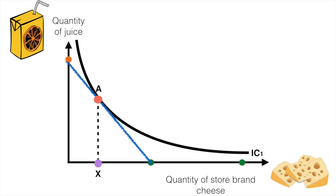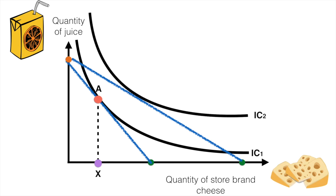Suppose the price of store brand cheese drops causing the budget line to pivot outwards. Now we add in an additional indifference curve IC2. The new maximum combination of consumption is B, which results in cheese consumption of quantity Z.